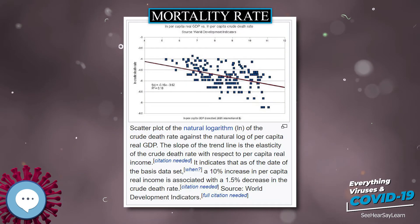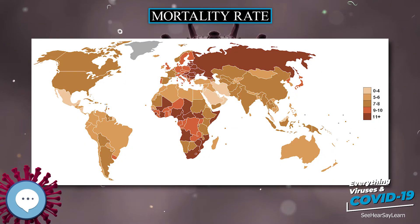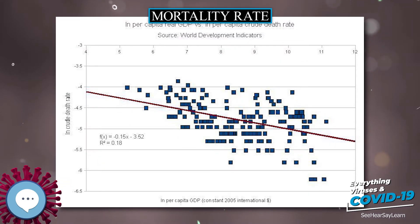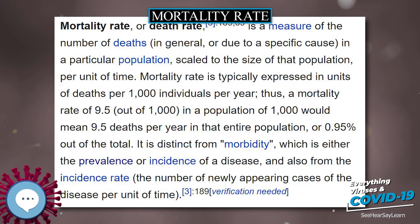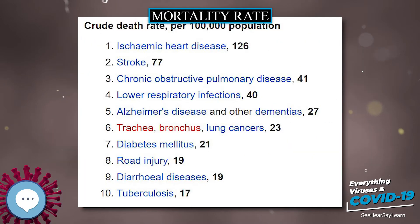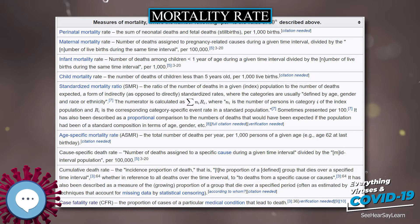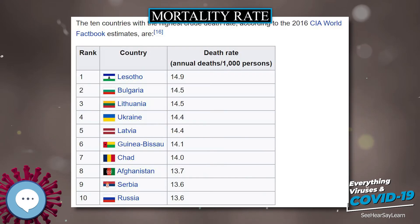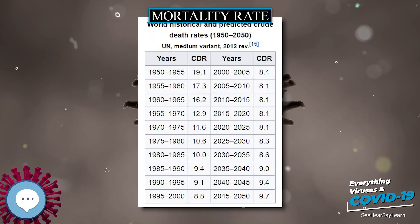In this formula, D represents the deaths from whatever cause of interest is specified that occur within a given time period; P represents the size of the population in which the deaths occur, however this population is defined or limited; and 10 to the power of n is the conversion factor — for example, multiplying by 10 cubed to get mortality rate per 1,000 individuals.